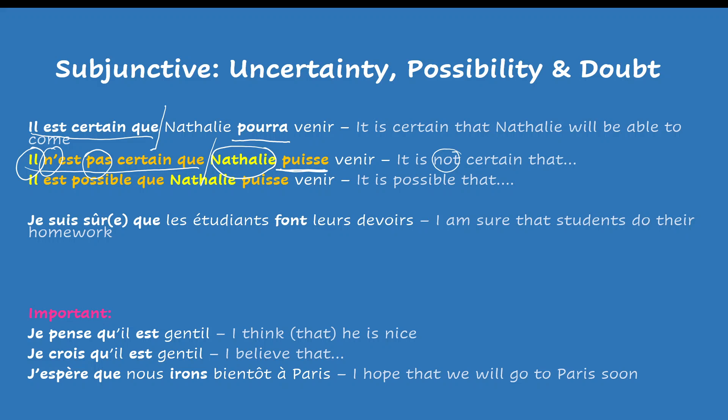In the other example, il est possible que Nathalie puisse venir — it is possible that Nathalie will be able to come. Again, here are two clauses, but in the first clause it's still uncertain — it expresses even more the possibility. When you have an expression that expresses possibility in the first clause, in the second clause you will need to use the subjunctive as well. You will also need two different subjects to be able to use the subjunctive.